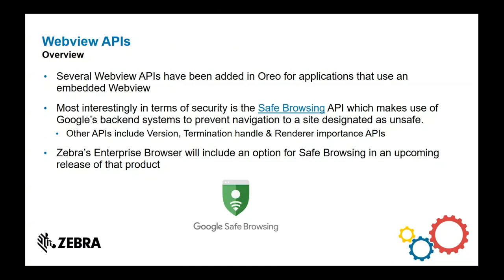WebView APIs — this is a really nice feature. On Google Chrome before Oreo, if you tried to visit a malicious website, you'd be warned. What Google have added now is the ability to have that safe browsing functionality in an application which has a WebView component within it. Previously you couldn't have it; now it's possible — that's called Safe Browsing. The Safe Browsing API is now available if you embed a WebView within your app. The Enterprise Browser product team has told me they are considering it for inclusion in an upcoming release, though I don't have information on which version — have a look down the line.